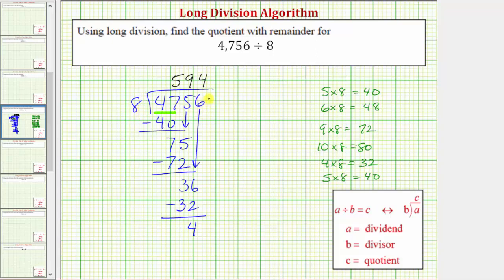Because there are no remaining digits in the dividend, we're actually done. This 4 is a remainder. Which means 4,756 divided by 8 is equal to 594 with a remainder of 4. So this tells us there are 594 eighths in 4,756 with a remainder of 4, or with 4 left over.